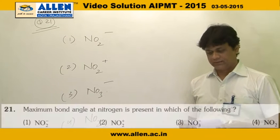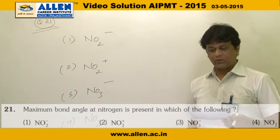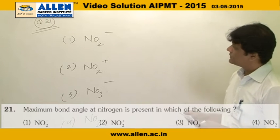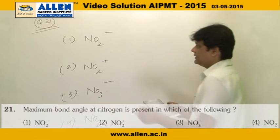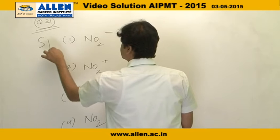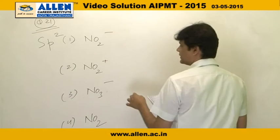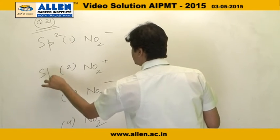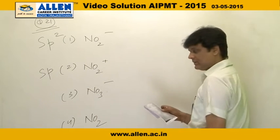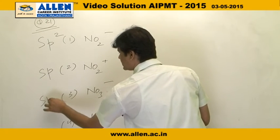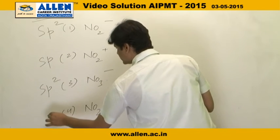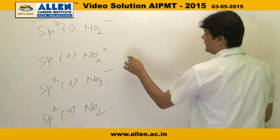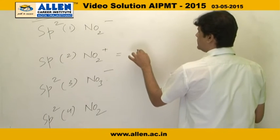In question number 21, it is asked: maximum bond angle at nitrogen is present in which of the following? The first option is NO2⁻, where the hybridization is sp2. In NO2⁺, the hybridization is sp. In NO3⁻, the hybridization is again sp2, and in NO2, the hybridization is sp2.